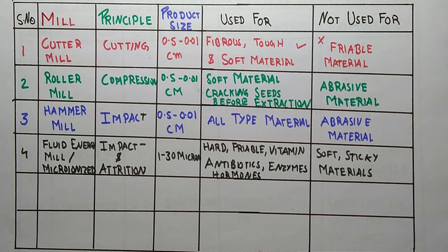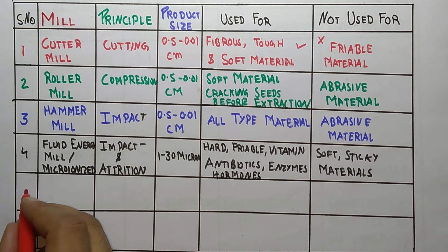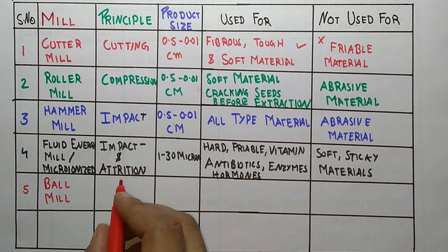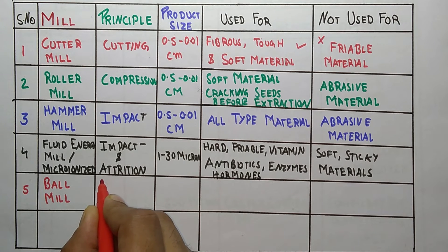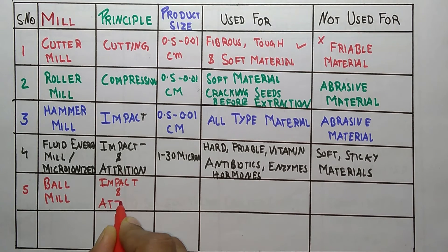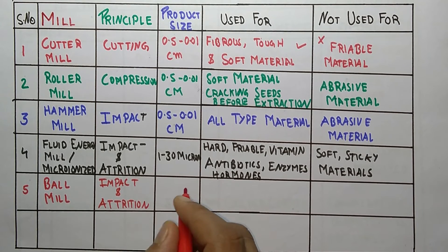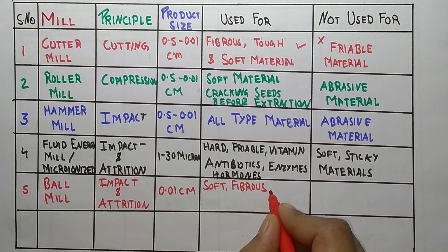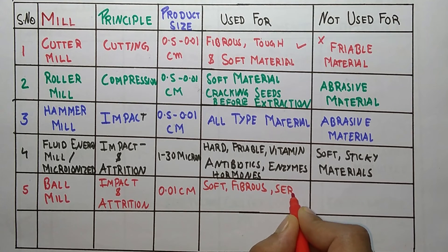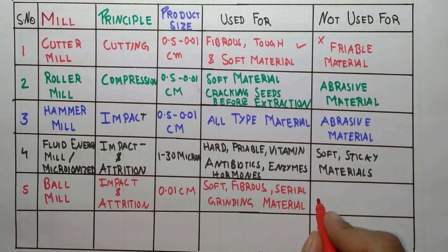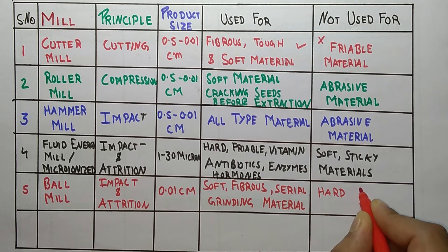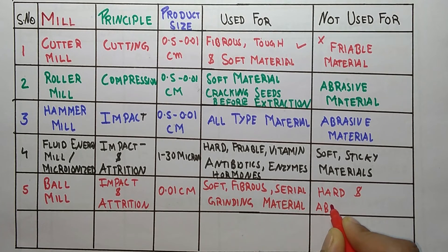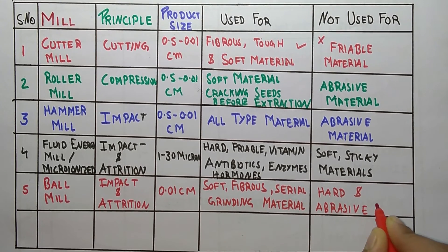The fifth one is ball mill. Its principle is attrition, the same as fluid energy mill. The product size range is 0.01 cm. It is used for soft, fibrous, and cereal grinding materials. It is not used for hard and abrasive materials.